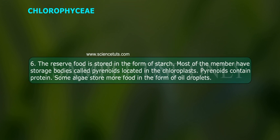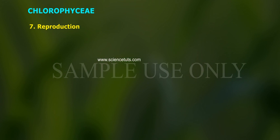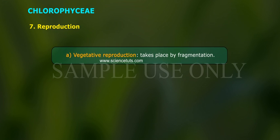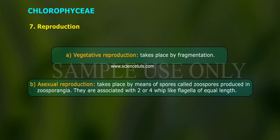6. The reserved food is stored in the form of starch. Most members have storage bodies called pyrenoids located in the chloroplasts. Pyrenoids contain protein; some algae store food in the form of oil droplets. 7. Reproduction: a. Vegetative reproduction takes place by fragmentation. b. Asexual reproduction takes place by means of spores called zoospores, produced in zoosporangia, associated with 2 or 4 whip-like flagella of equal length.